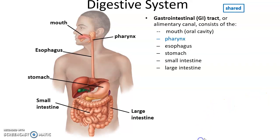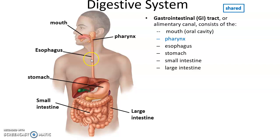This is a tube that runs from our mouth to our anus. It consists of the mouth, where the oral cavity is found, the pharynx in the back of the throat, the esophagus — a tube leading down to the abdominal cavity where we have the stomach — and then the small intestine and the large intestine, which of course ends with the anus.